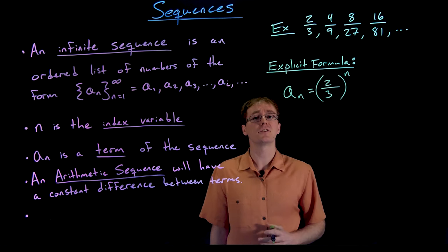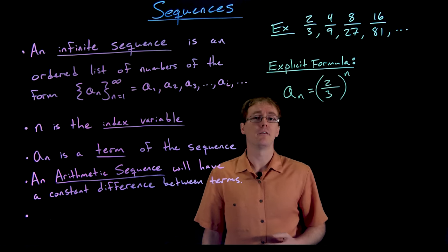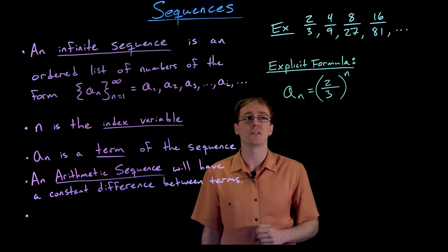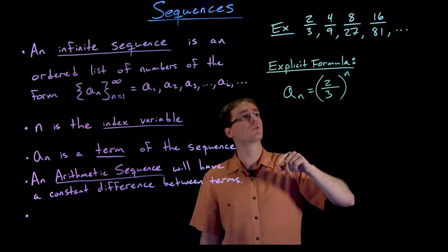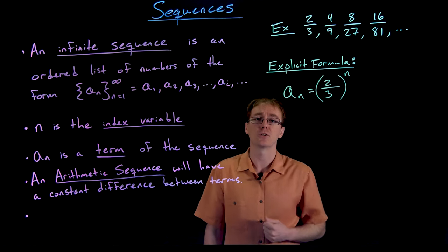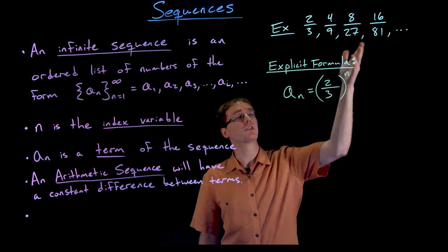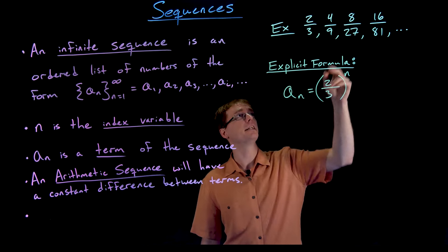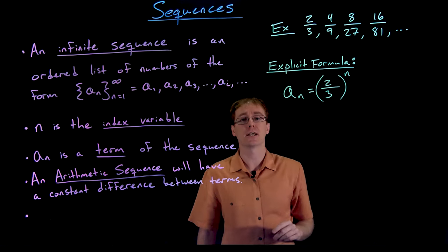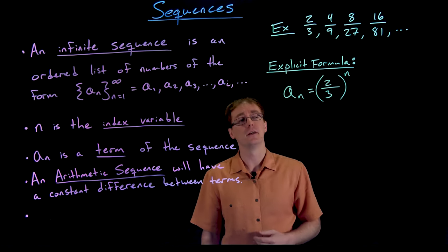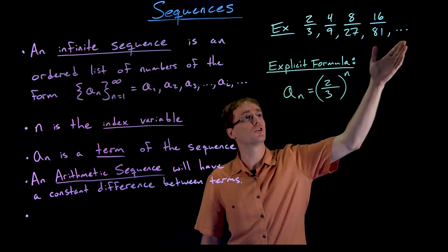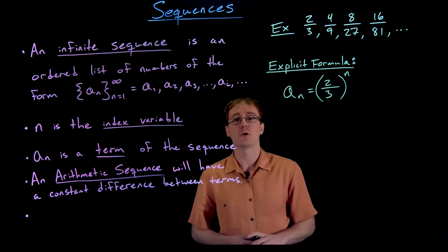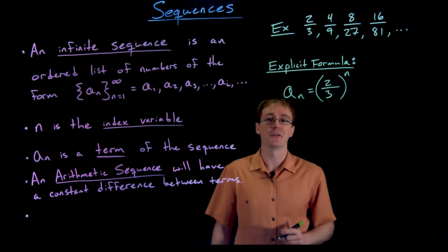Our explicit formula for this sequence is two thirds raised to the power of n. Let's check: plugging in n equals one gives two thirds to the first, which is two thirds. Plugging in n equals two gives four ninths, n equals three gives eight twenty-sevenths, and n equals four gives sixteen eighty-firsts. Using this explicit formula we can quickly generate any future term — for example, the one hundredth term would be two thirds to the power of one hundred.